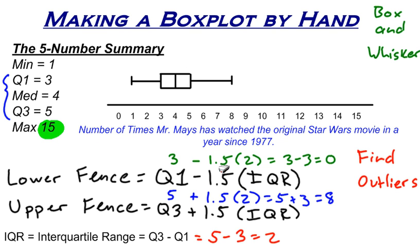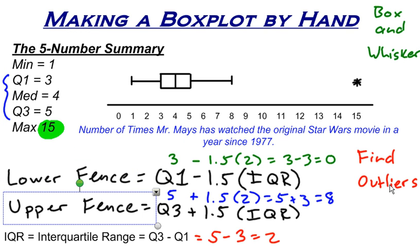But what about 15? We found that 15 was outside of the upper fence, so that is an outlier. It's still part of our data set, so we mark it with a little star at 15. This box plot shows the full five-number summary and any outliers: minimum at 1, first quartile at 3, median at 4, third quartile at 5, and maximum at 15 (which is an outlier — the highest non-outlier value is 8). That's how you use the five-number summary, find fences, identify outliers, and make a box plot by hand.